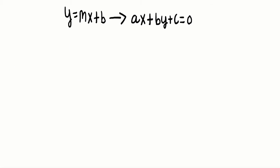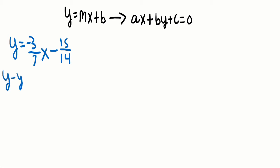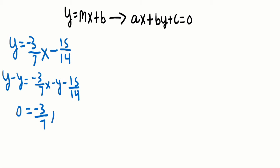We're still converting Y equals MX plus B to AX plus BY plus C equals 0, but this time we're looking at an equation with fractions. Let's say we have Y equals negative 3 over 7X minus 15 over 14. The first step is still to bring our terms to one side by subtracting Y on both sides, which gives us 0 equals negative 3 over 7X minus Y minus 15 over 14.